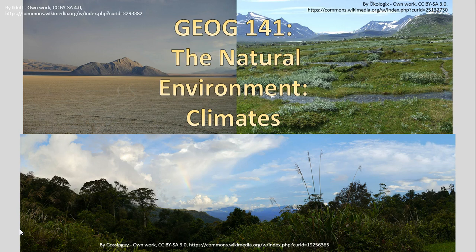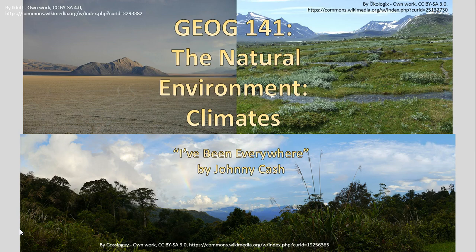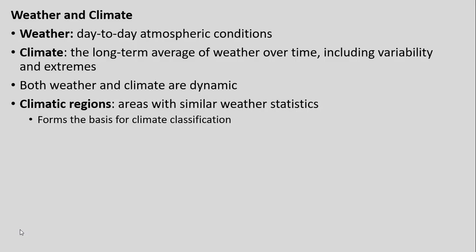You can see from the upper left-hand corner an example from more of a desert type of landscape, on the bottom a tropical rainforest landscape or climate, and on the top right kind of a tundra into a mountainous highland environment or climate. Our song, fittingly, to help us get in the mood for this lecture is 'I've Been Everywhere' by Johnny Cash, because if you've been everywhere, you've seen all sorts of these climate types we're going to be talking about.